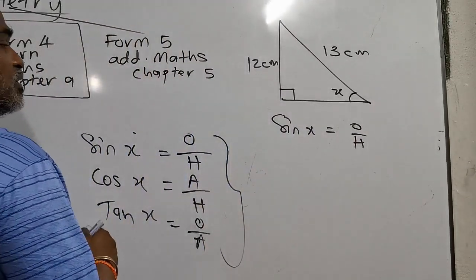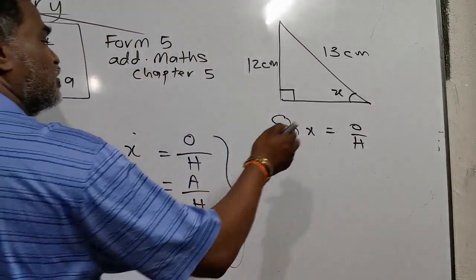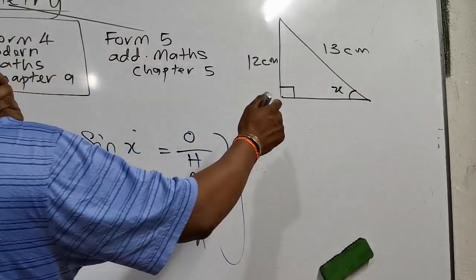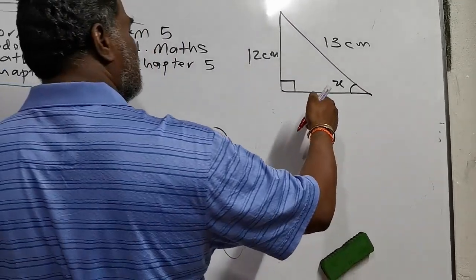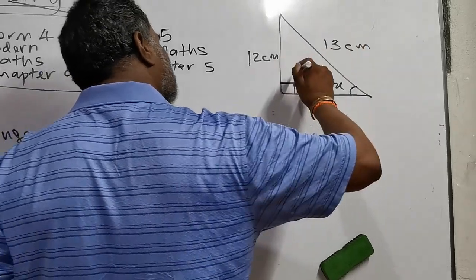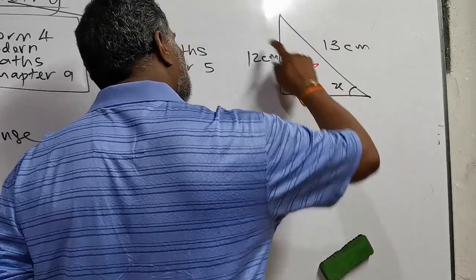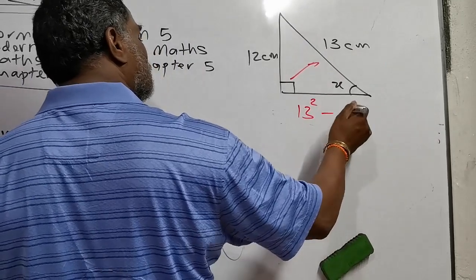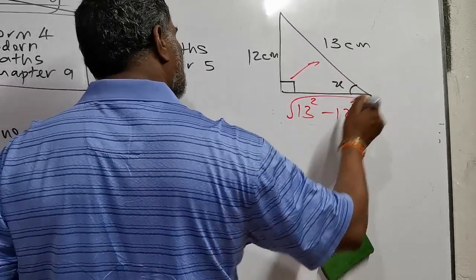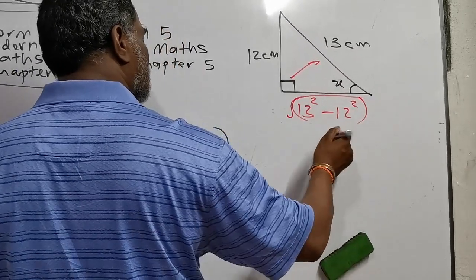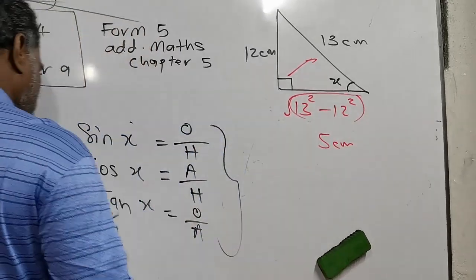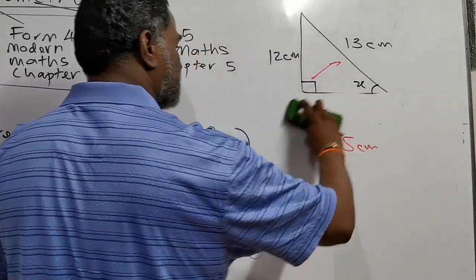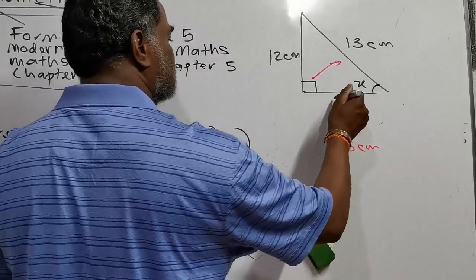Before finding sin x, you need to use the Pythagoras theorem to find the missing side. You want to find the third side, so: √(13² - 12²). When you press the calculator you get 5. Therefore we know the missing side is 5. That's why Pythagoras theorem is very important.